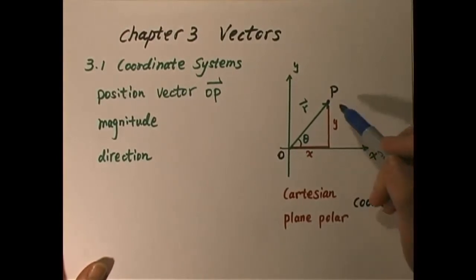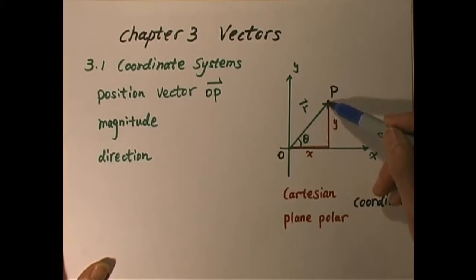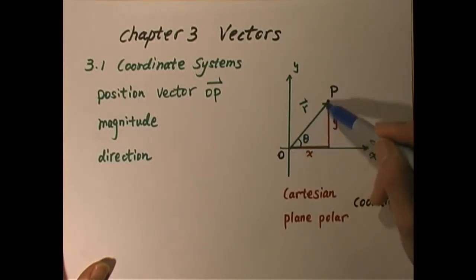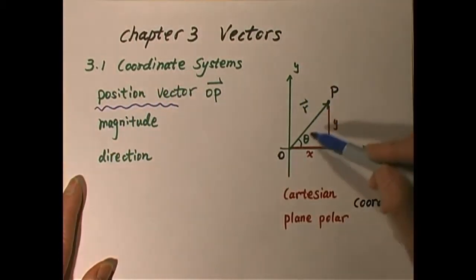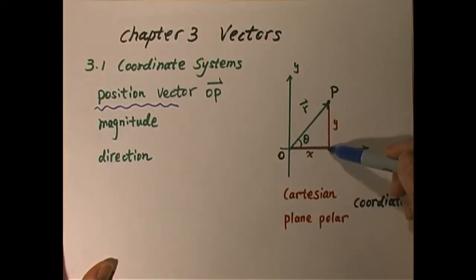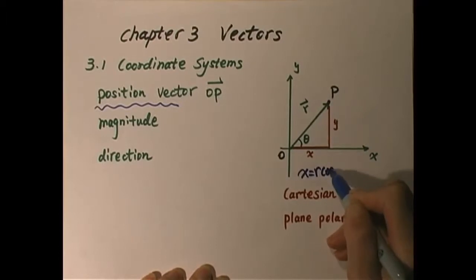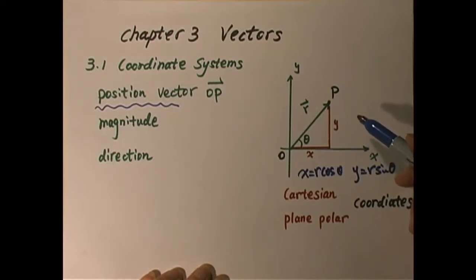Now, if we have a point — let's say point P — it has a position in the Cartesian coordinate of x and y. If we connect this point with the origin, this arrow r we give a name: it's called the position vector. This position vector consists of an x component, which is r·cosine(θ), and a y component of r·sine(θ), and x and y are the coordinates of point P.